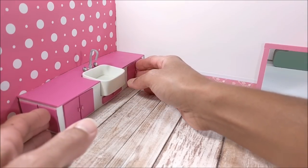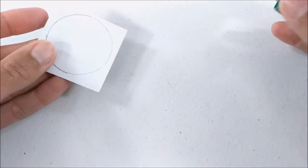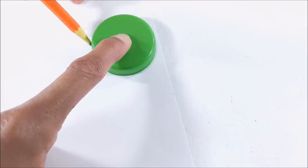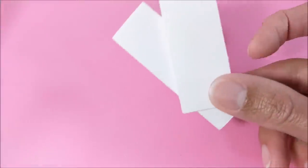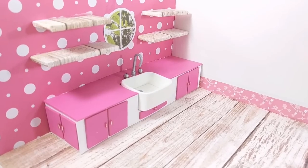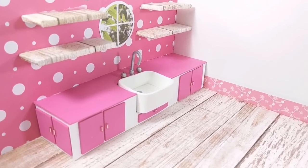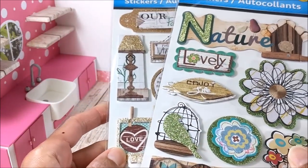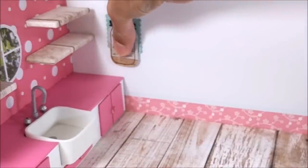I glue that to my wall. Just making a super easy little window using scrapbook paper and cardstock. Then I wrap more foam board for shelves, and I'm using these really cute puffy stickers from Dollar Tree for detail.